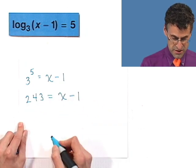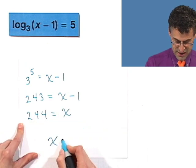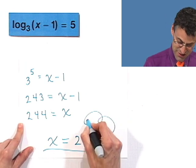If I add 1 to both sides, I see 244 equals x, and if you like to write it normally, x equals 244. There it is, you can take as many lines as you want. It's done, it's finished, it's complete, that's it.